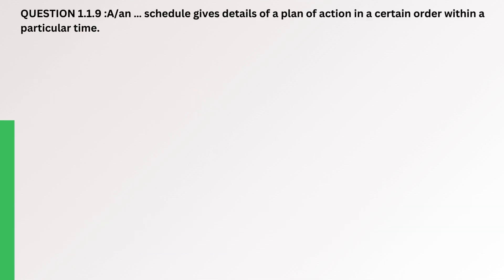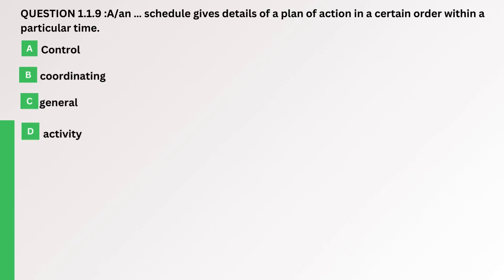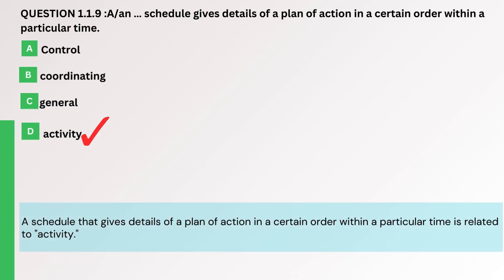Question. An activity schedule gives details of a plan of action in a certain order within a particular time. A. Control. B. Coordinating. C. General. D. Activity. The correct answer is D. Activity. A schedule that gives details of a plan of action in a certain order within a particular time is related to activity.